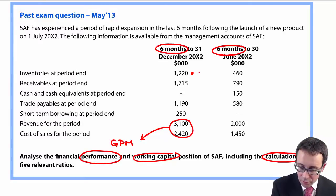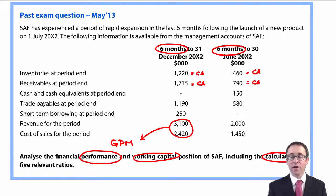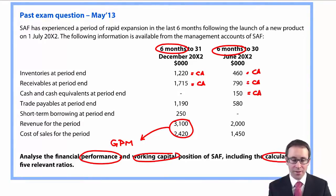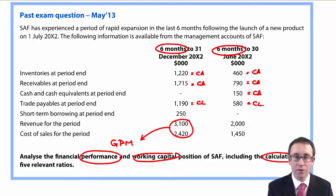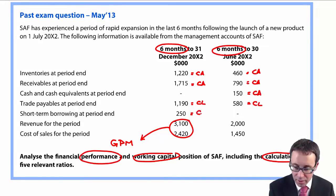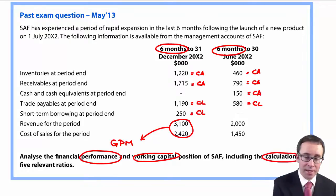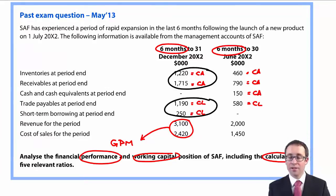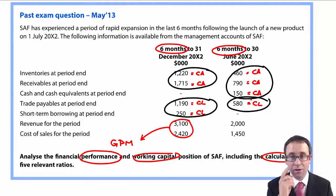Inventory and receivables are current assets, so you have current assets of inventory and receivables for both six-month periods. In the previous six-month period, you also had a cash asset — cash and cash equivalents. Your payables are a current liability, but be careful: in the second six-month period, borrowings also constitute a current liability.